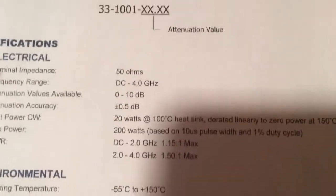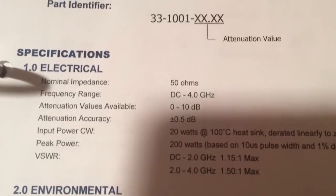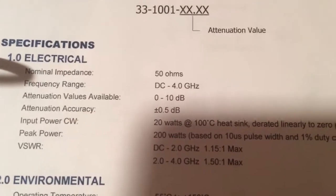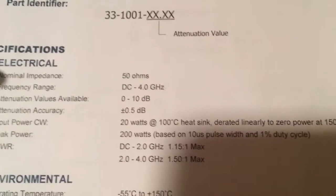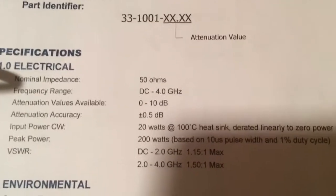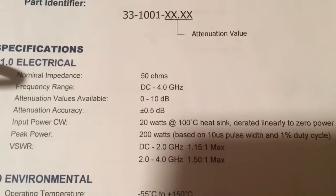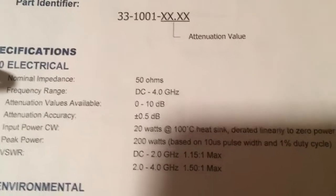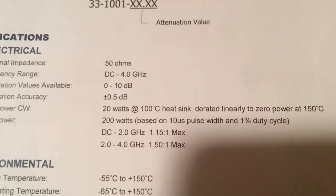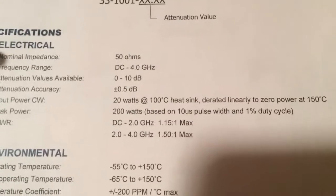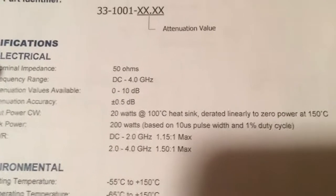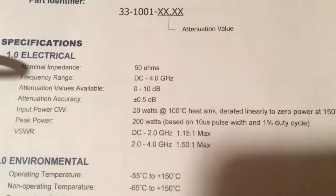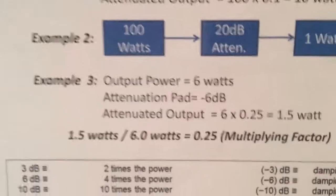Looking at the specifications here, the input and output impedance is 50 ohms, the frequency range is DC to 4 GHz, and attenuator values are available from 0 to 10 dB. From 0 to 2 GHz, the SWR is about 1.15:1, so you should get a reasonable match using these attenuator pads. These are from EMC Technologies, now called Smith Interconnection — you can Google them as they changed their name.